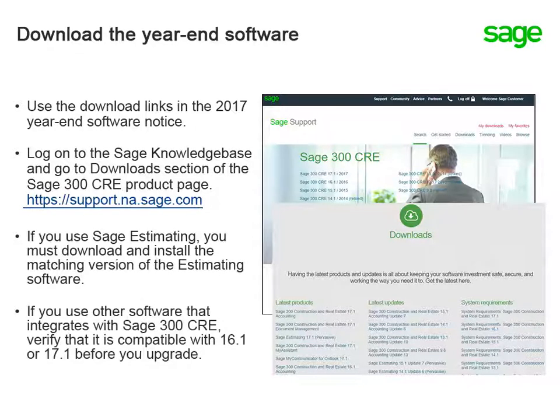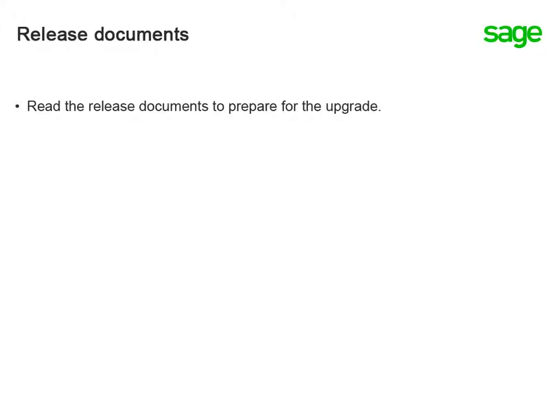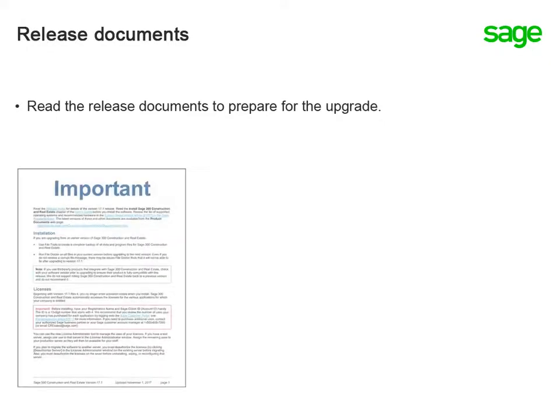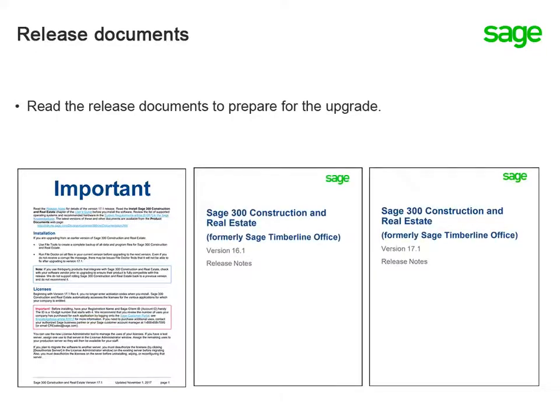If you use other software that integrates with Sage 300 Construction and Real Estate, check with the software vendor that it is compatible with 16.1 or 17.1 before you upgrade. As with any software upgrade, you should go over the release documents beforehand, including the important document, which contains critical information to be aware of before you upgrade, and the release notes, which outlines what's changed in the software.